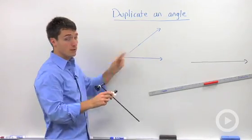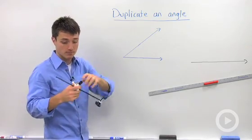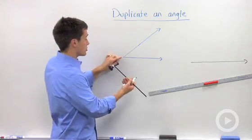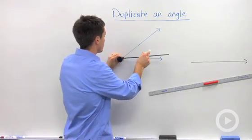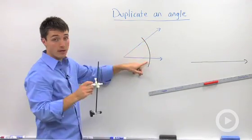And you're going to swing an arc. And here it doesn't matter how wide your compass is. So you're going to put the sharp end on the vertex, and you're going to swing an arc so that you have two points of intersection on your rays.